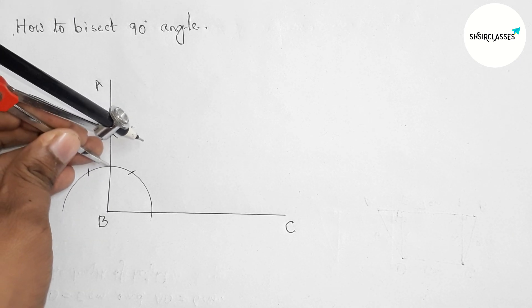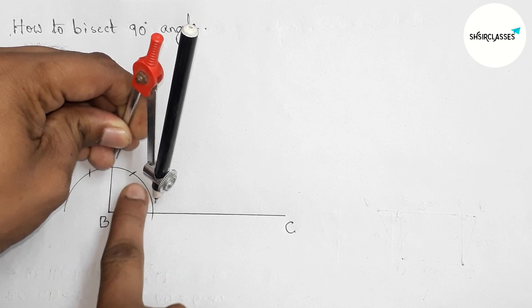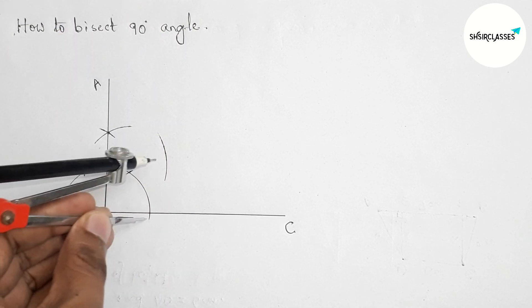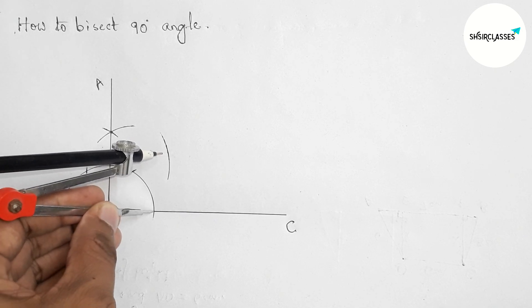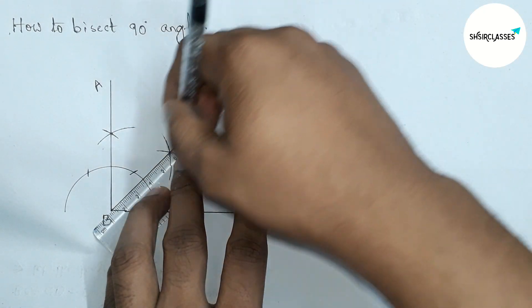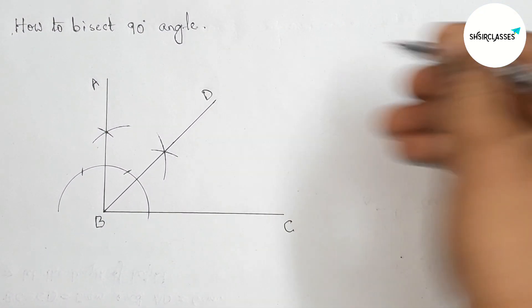Putting the compass here first and taking greater than half of this. Drawing an arc here and with the same length, putting the compass here and cut here, and cut here. Now joining this line and taking here point D.